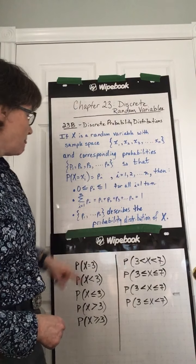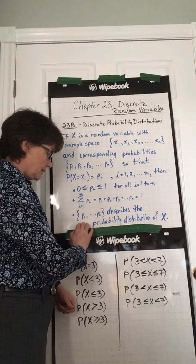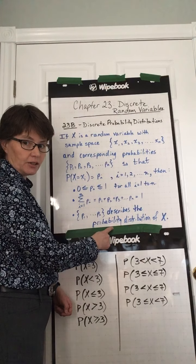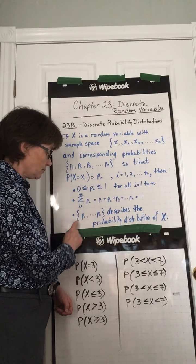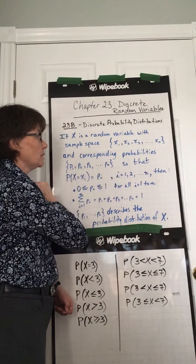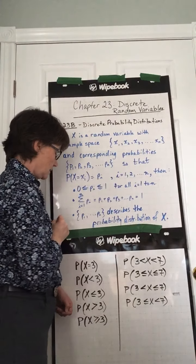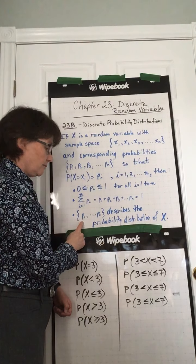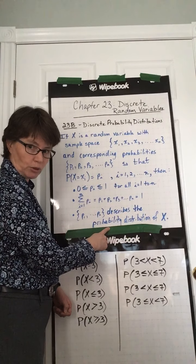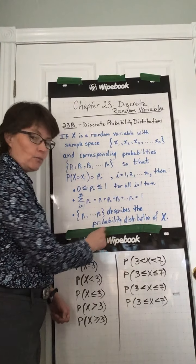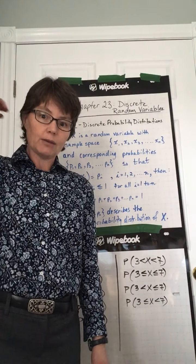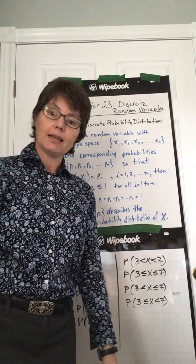And thirdly, this set of probabilities describes the probability distribution of x. So this means the set of, those curly brackets, just like these curly brackets up here mean the set of, these curly brackets mean the set of, the set of probabilities describes the probability distribution of x. And we drew that in the video 23a with the table at the end of the video.